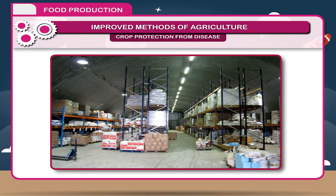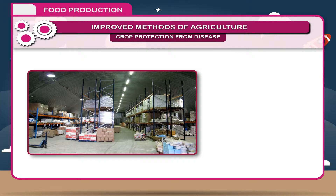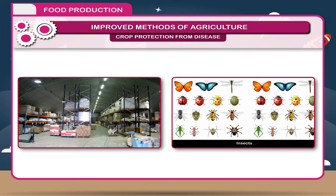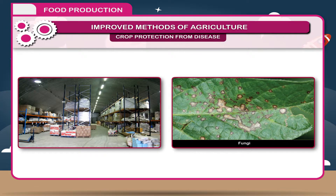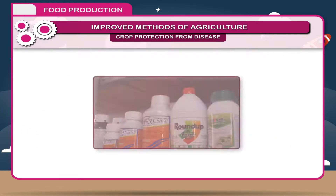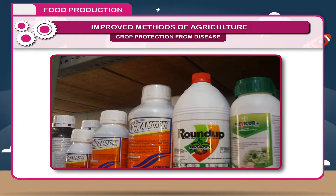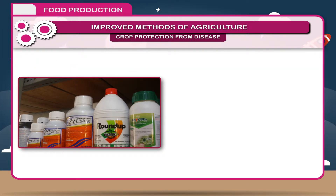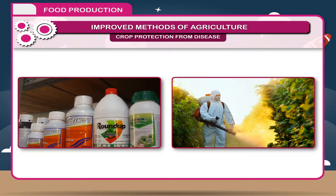In storehouses also, seeds are protected from the attack of insects, fungi and rats, etc. Highly toxic pesticides should not be used because they have side effects and are fatal to crops and human health.